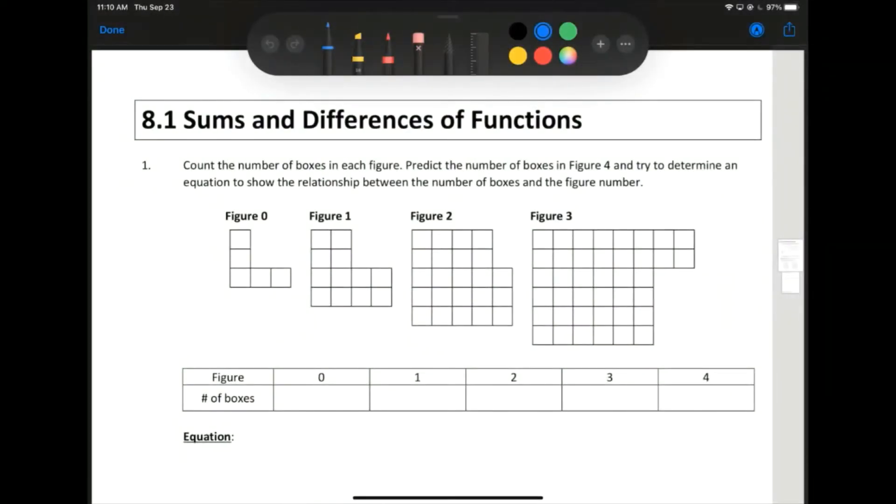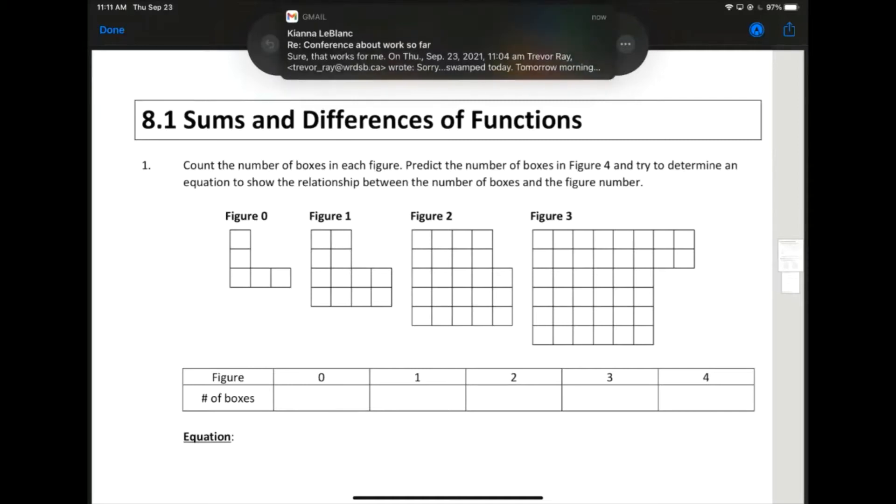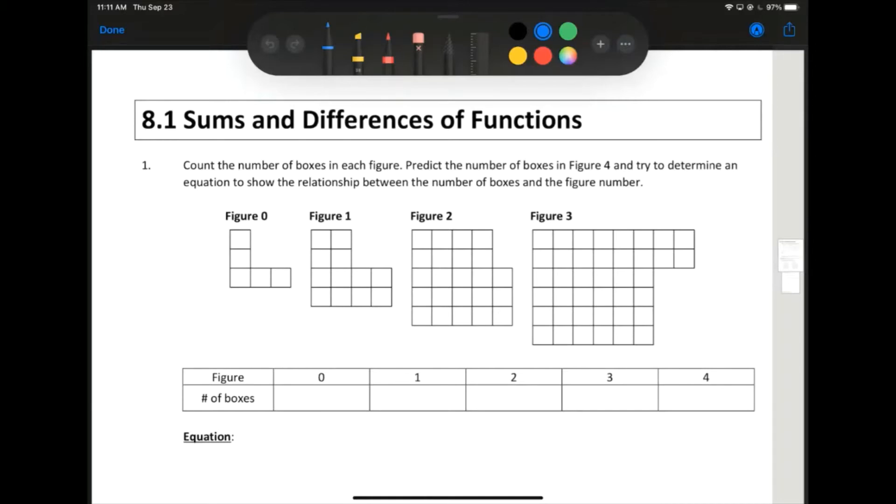Okay, the first question we're going to take a look at has some figures there with little boxes in them, and they have an interesting pattern. We'd like to come up with an equation that represents the pattern we're taking a look at there. So let's start by just throwing in the number of boxes in each of these figures. We'll start with figure zero. Figure zero has five boxes.